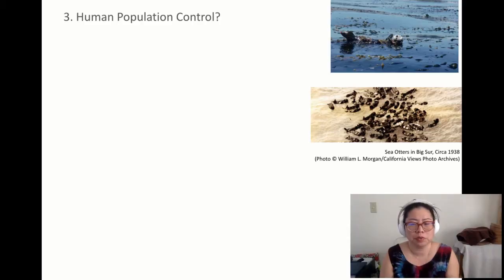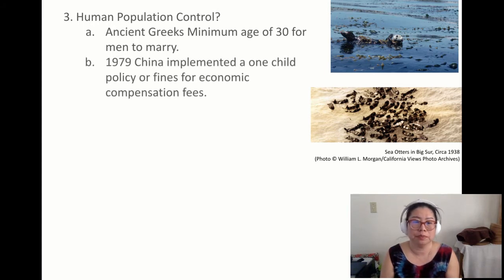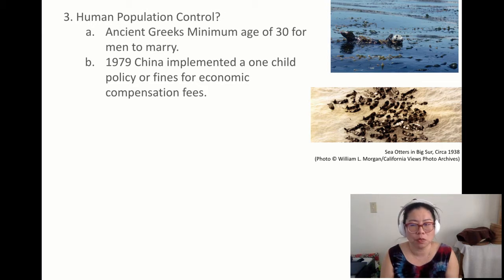Human population has always been close to going over the limit. So where has history tried to protect our society? The ancient Greeks used to put a minimum age for marriage at 30. And in 1979, China implemented a one-child policy with fines — economic compensation fees — meaning if you have more than one child, you would have to pay the government more money. To this day, that is still common practice in China.